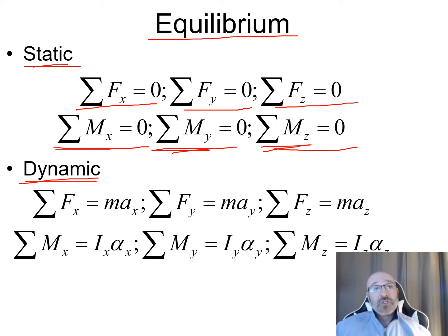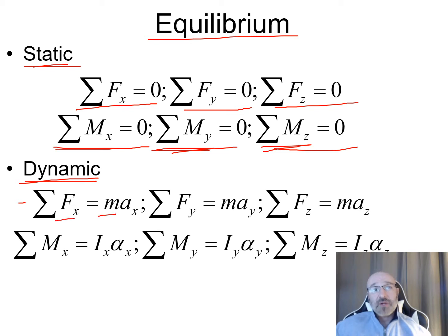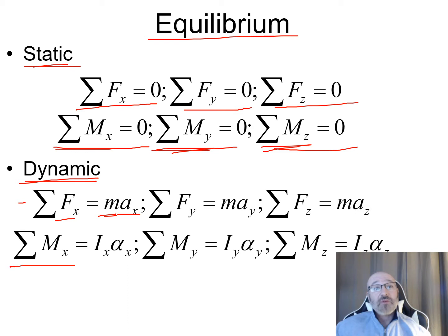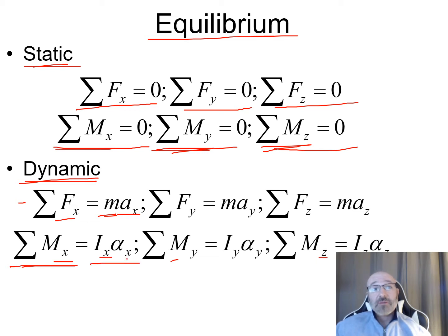If we're dealing with an object in motion, that's where Newton's Second Law comes in. Summation of forces in X equals mass times acceleration. We break this down into individual X, Y, and Z components. The same applies to moments in motion — broken into X, Y, and Z components — set equal to I·alpha in each direction.